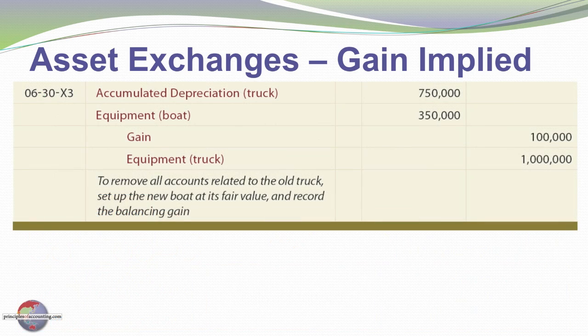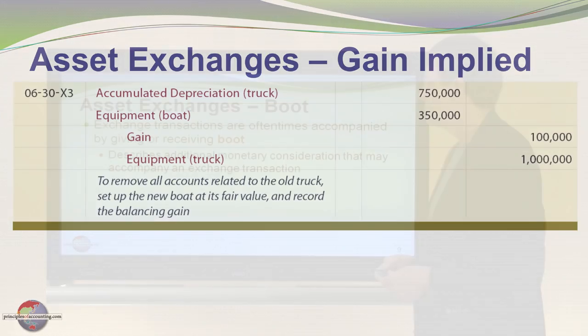Here's the journal entry for the gain scenario. We again remove the equipment from the books: credit equipment $1 million, debit accumulated depreciation $750,000. We establish the boat on the books at its fair value of $350,000. And we need a credit of $100,000 to balance out the entry, coincident with the gain recognition.